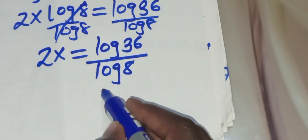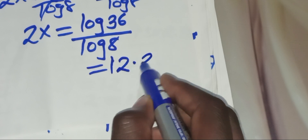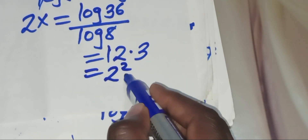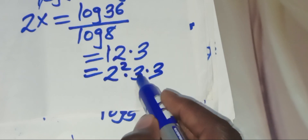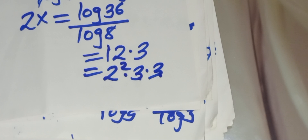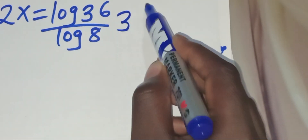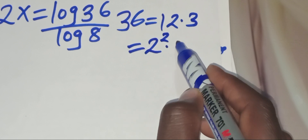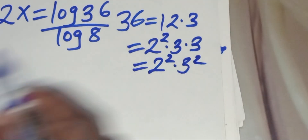Now we can express 36 as 12 times 3, of which we can express 12 as 2 to the power 2 multiplied by 3. So 2 squared is 4, times 3 is 12, times 3 is 36. Now we are seeing that we have 2x equal to log 36 divided by log 8, whereby we can express 36 as 2 to the power 2 multiplied by 3 to the power 2.